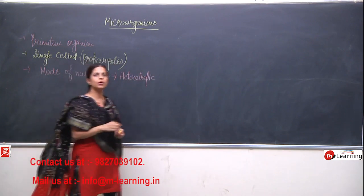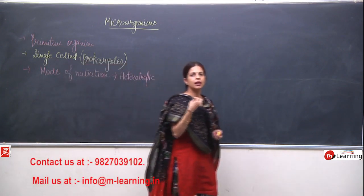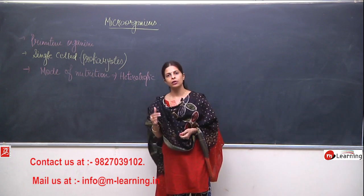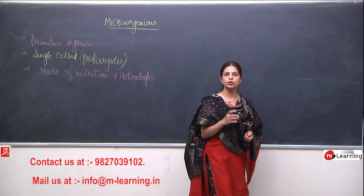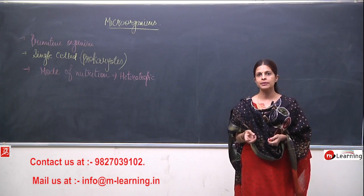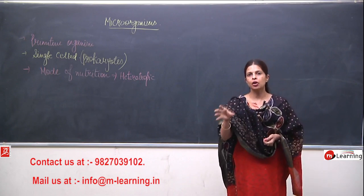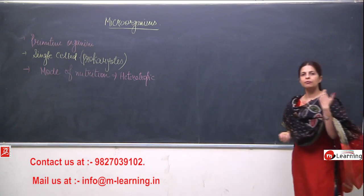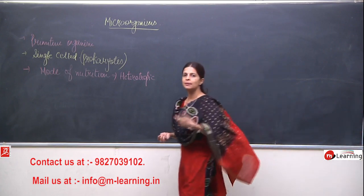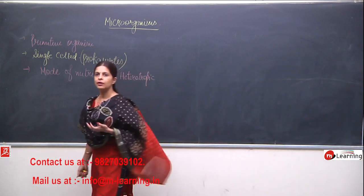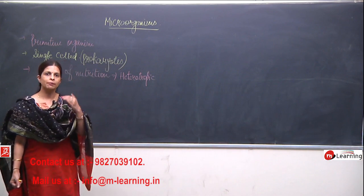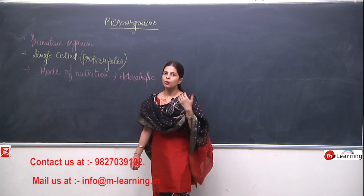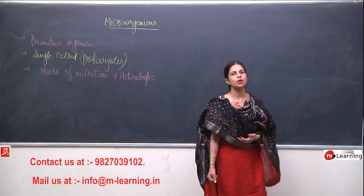Mode of nutrition means the way how they feed themselves. Autotrophic — who are autotrophic? Plants are autotrophs. Auto means self and tropic means nutrition. Plants themselves make their own nutrients, so they are known as autotrophs, meaning their mode of nutrition is autotrophic.